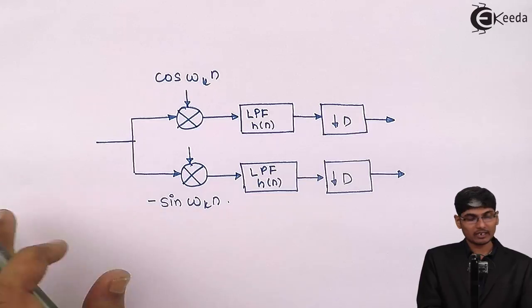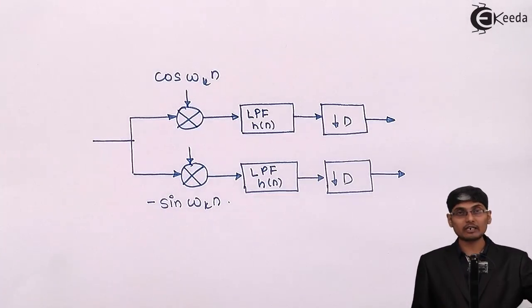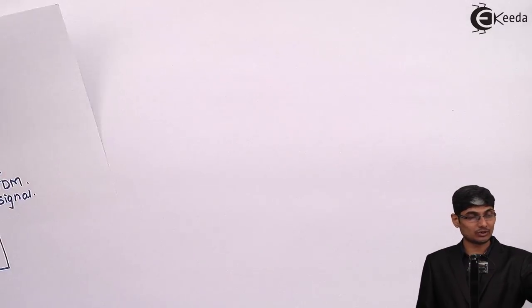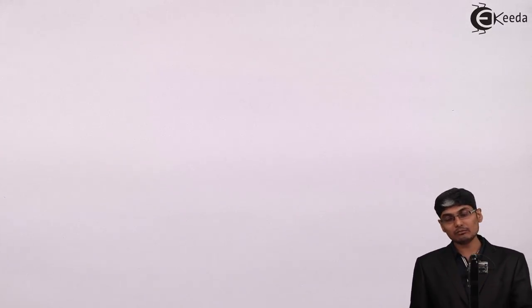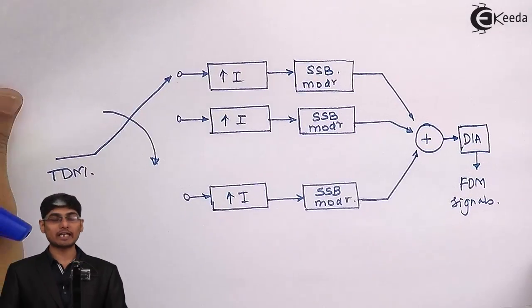Let us see the second case wherein I have a TDM signal and I wanted to perform an FDM transmission. For a TDM to FDM transmission, this is a block diagram.